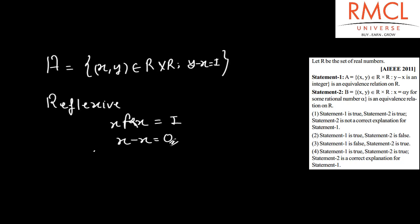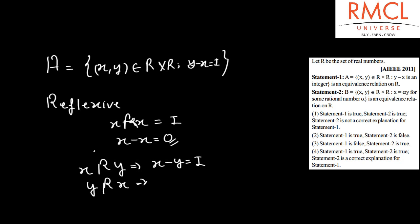Second, we will find that A is symmetric or not. If A is symmetric, then it must satisfy X relates to Y and Y relates to X. If X minus Y is an integer, then Y minus X is also an integer. So it also satisfies the symmetric condition.